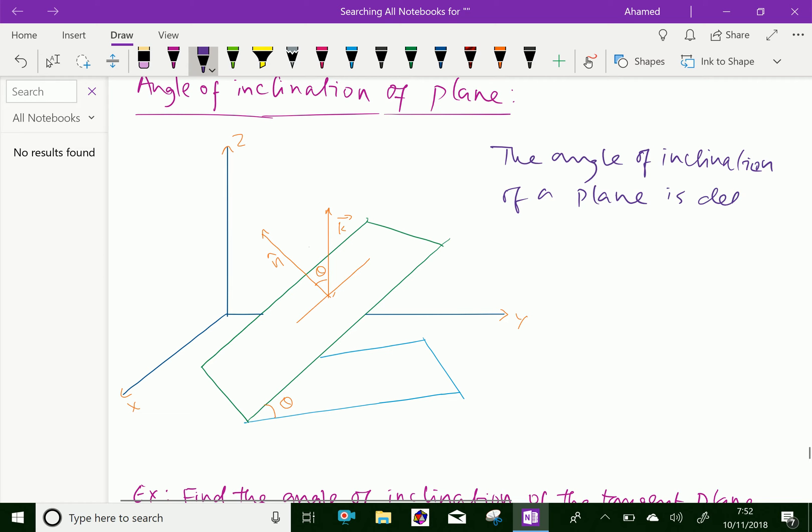Angle theta is between 0 to 90 degrees, or you can write 0 to π/2.